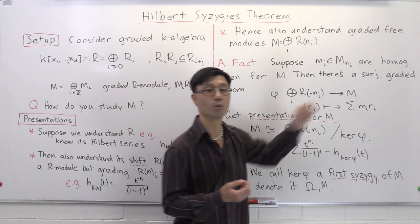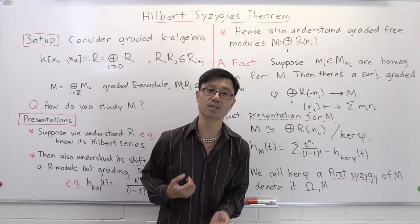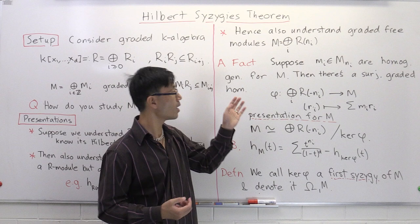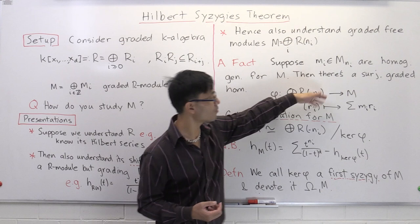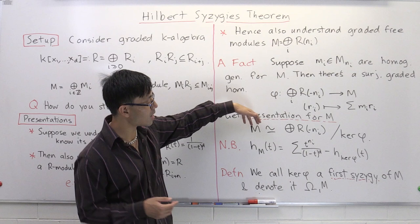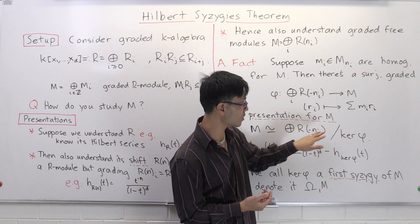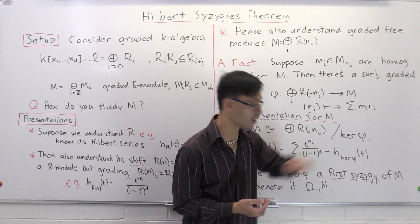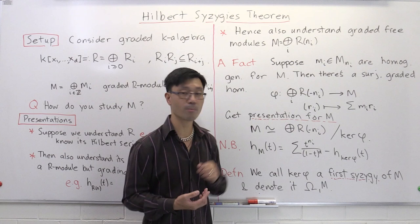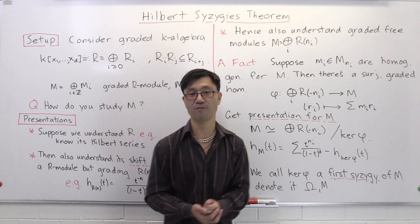You have a surjective homomorphism φ allowing you to compare M with a graded free module we understand. We can apply the first isomorphism theorem for modules: M is isomorphic to the domain — this graded free module — modulo the kernel of φ. So to understand M, we can write it as a quotient of a graded free module we know, and we've swapped the problem of understanding M to understanding this submodule — the kernel of φ — of the graded free module. But there's no guarantee from what we've done so far that we understand ker φ.